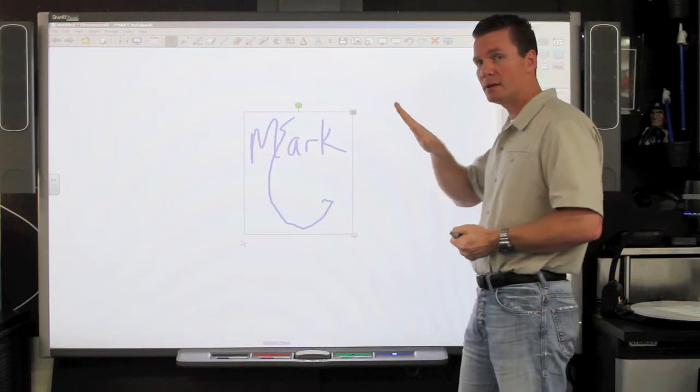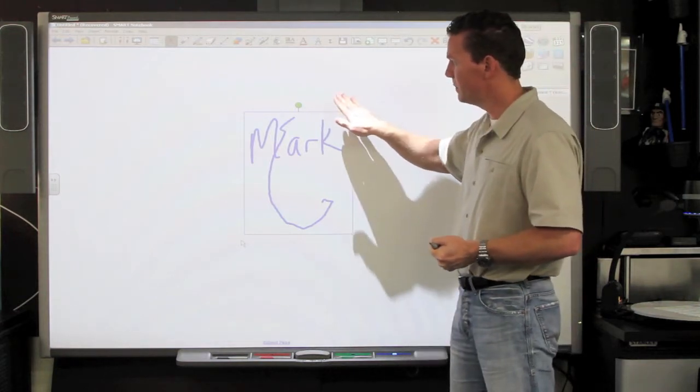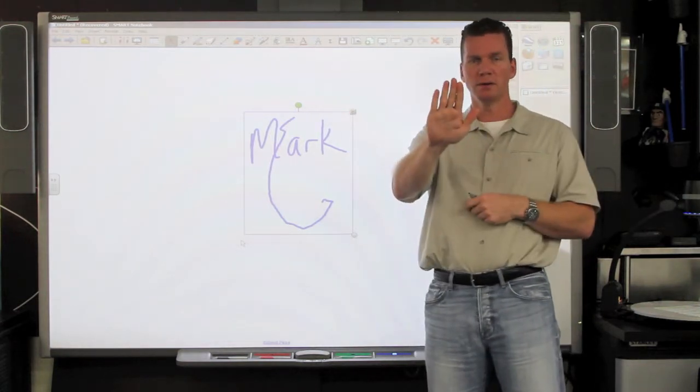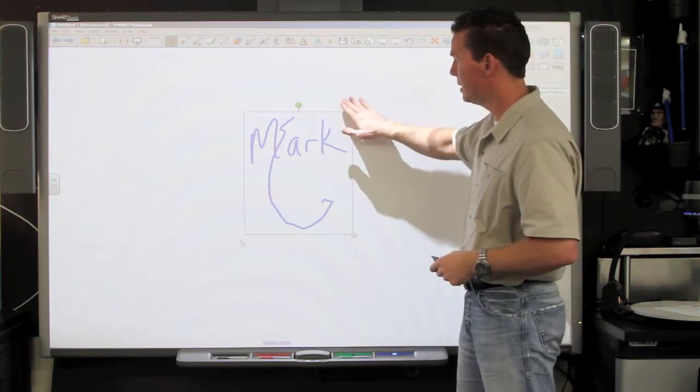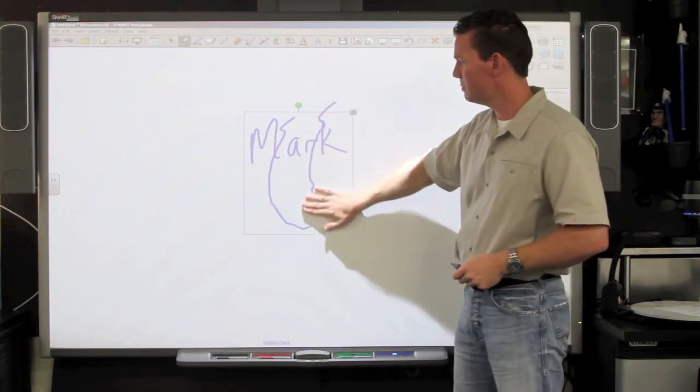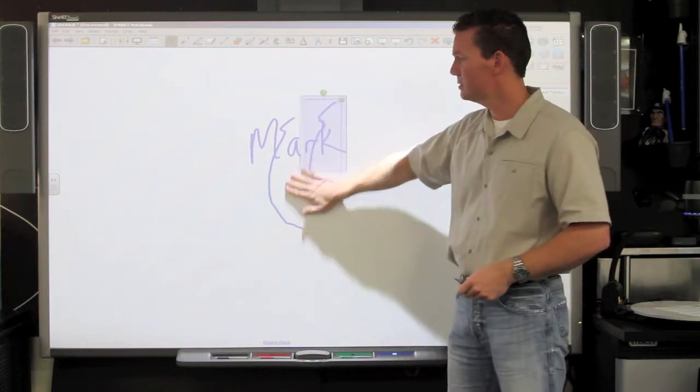So what can happen is if you're tentative and too gentle, your longest finger, instead of your hand, your longest finger is touching the board first. So it thinks, okay, something small is touching me, either a pen or a selection tool.